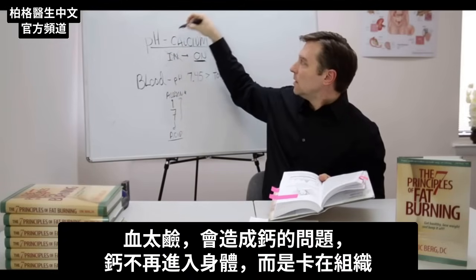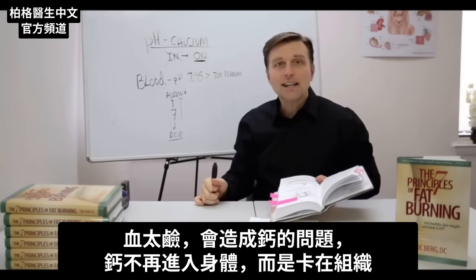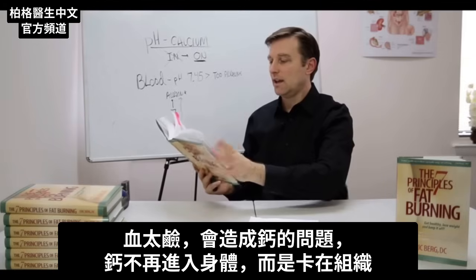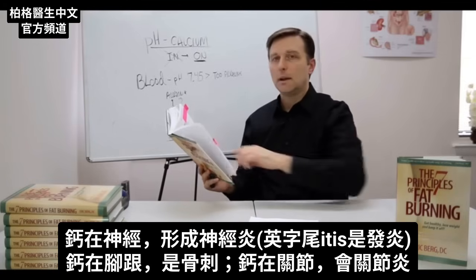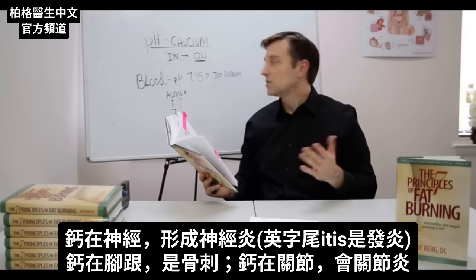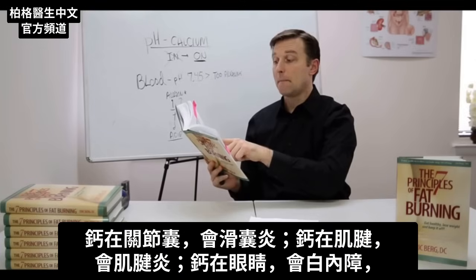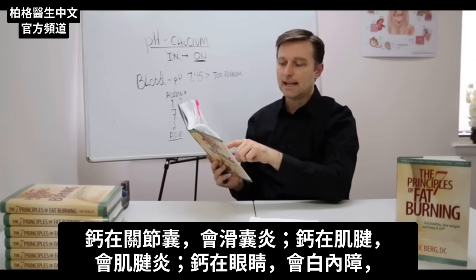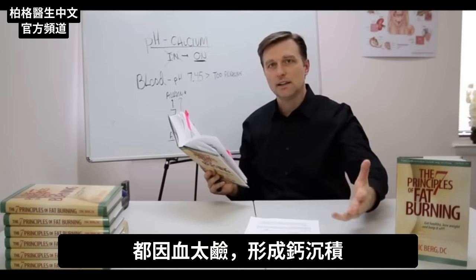Calcium will not go properly into the body anymore — instead it goes onto the tissues. It develops on the nerves as neuritis, on the heels as heel spurs, on the joints as arthritis, on the bursa as bursitis — that's a little sack around the joints — on the tendons as tendonitis, and on the eyes as cataracts.